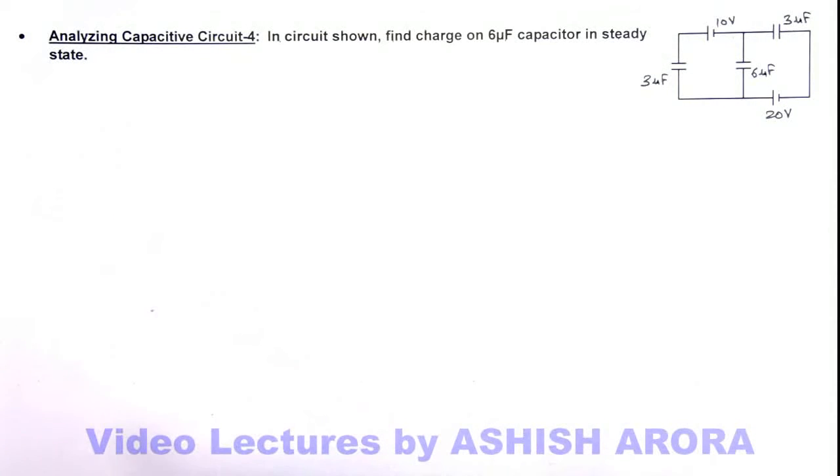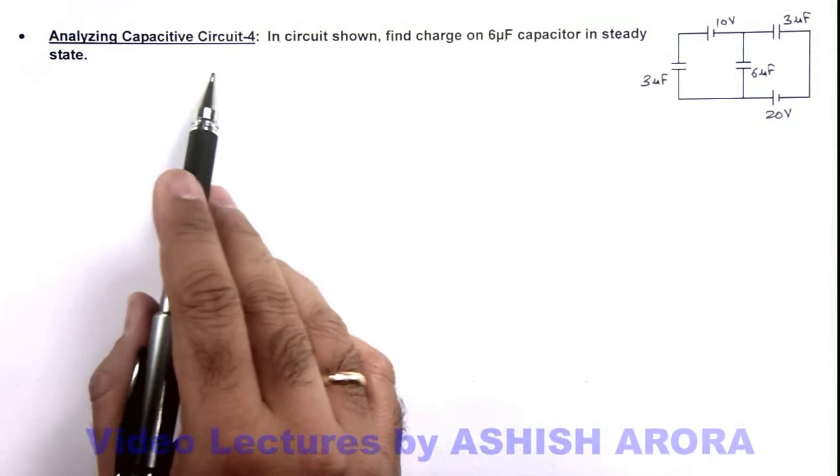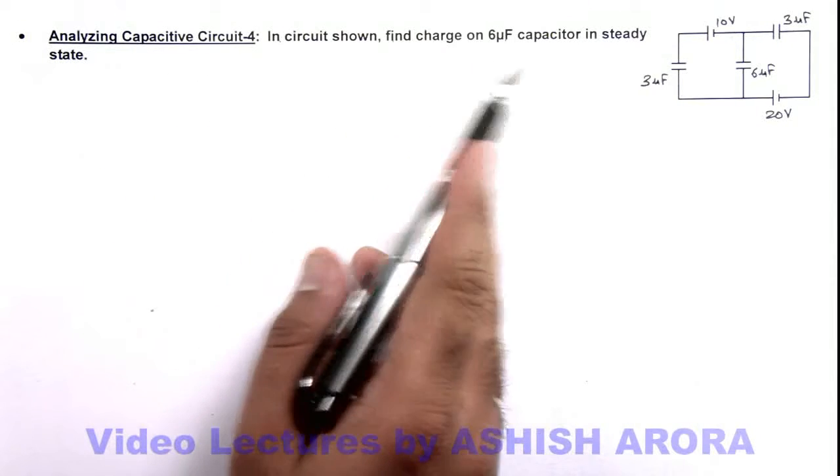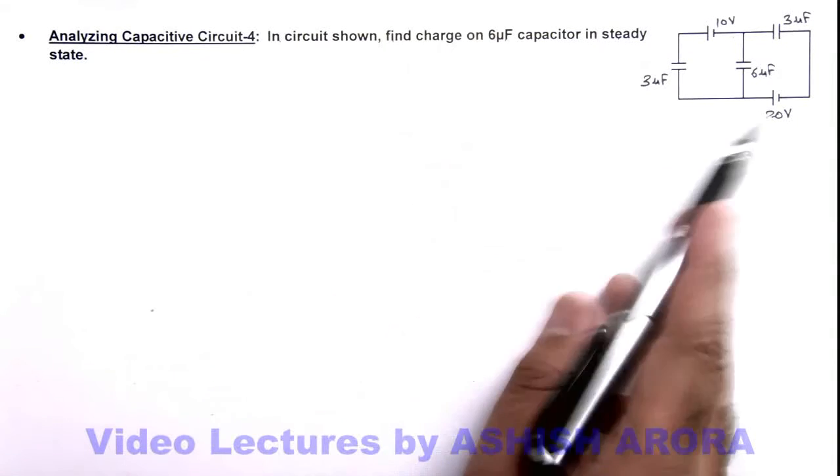This is another illustration for analyzing capacitive circuits. We are required to find the charge on 6 micro farad capacitor in steady state for the circuit shown.